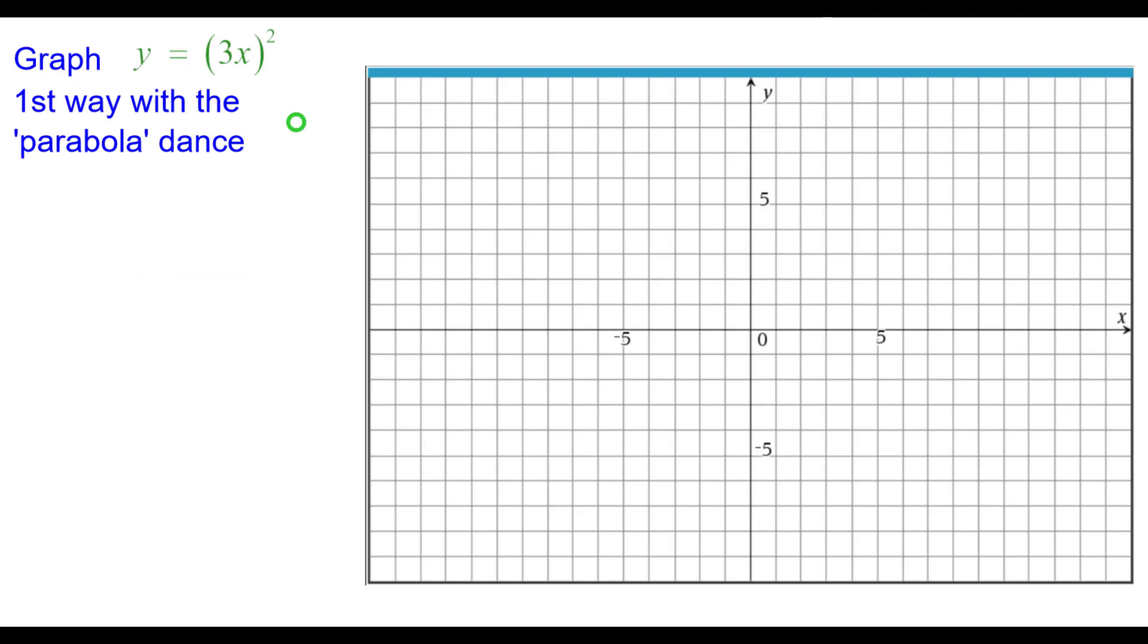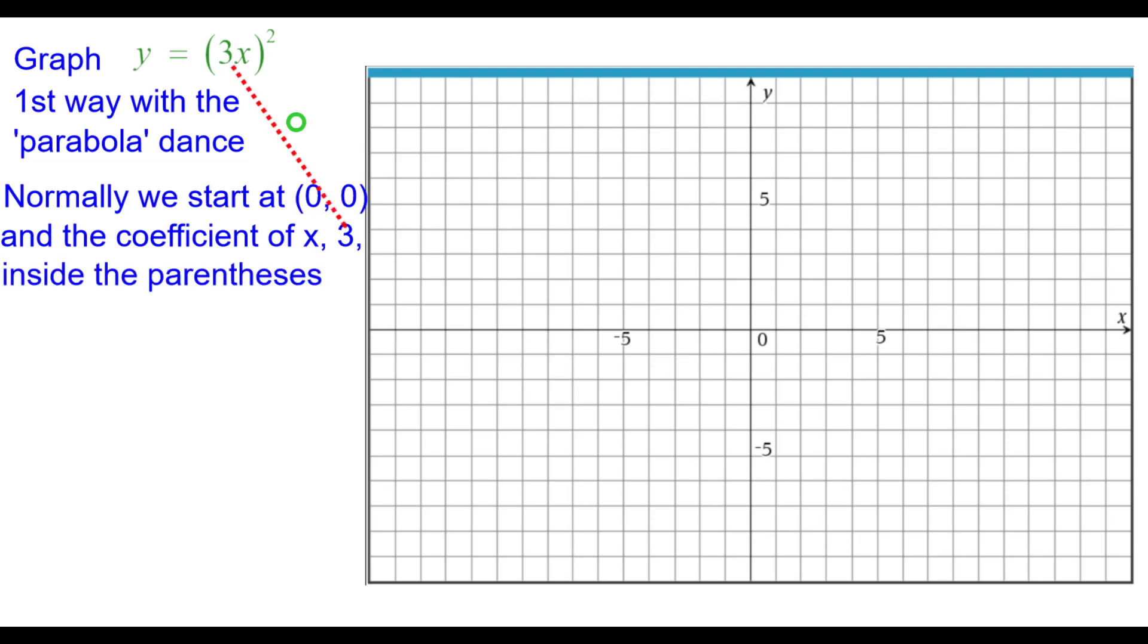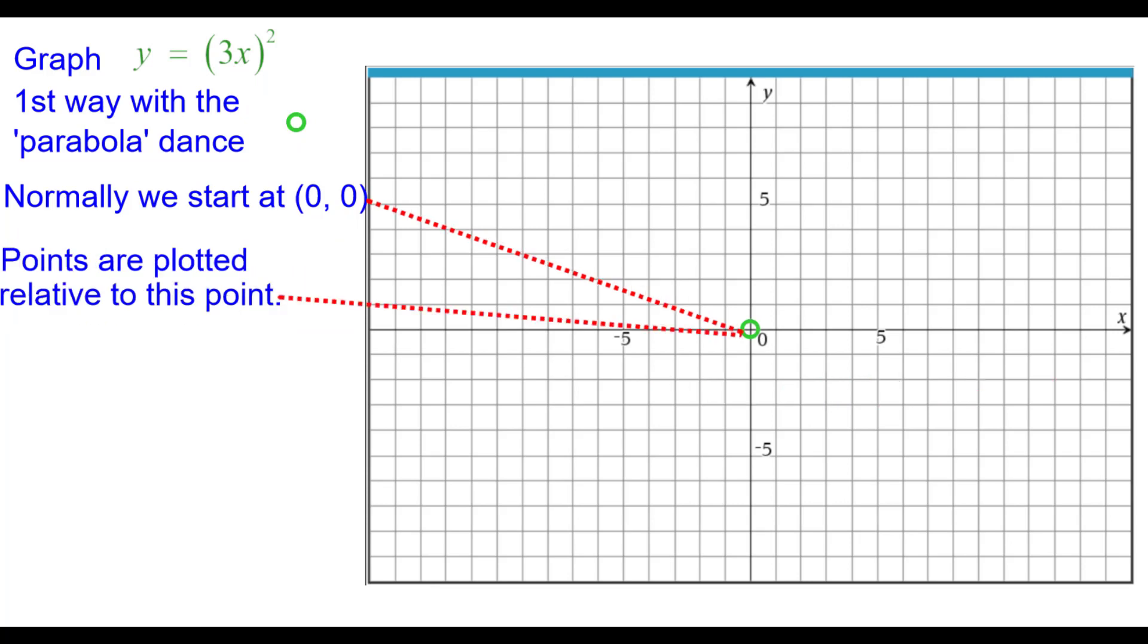The first way is with what we call the parabola dance. Normally we start at the origin and the coefficient k equals 3 inside the parentheses does not affect this point. As you can see when x equals 0, y is equal to 0 also. Points are going to be plotted relative to this origin point.